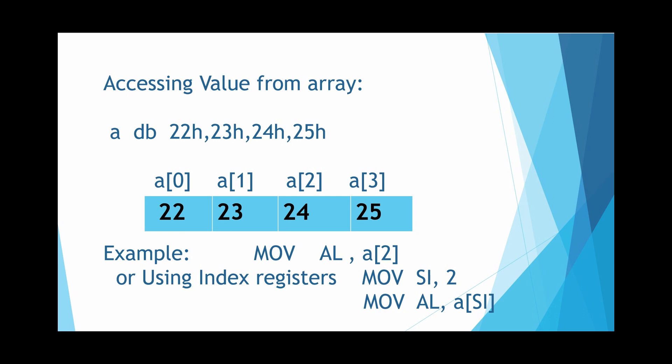Or we can also use index registers, that is SI and DI. So first we are moving 2 into SI, and again we are doing the operation MOV AL, A[SI]. That will be similar to the previous operation MOV AL, A[2].